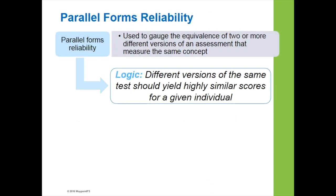The third type of reliability is called parallel forms. Here we're trying to gauge the equivalence or similarity of two or more different versions of the same assessment that measure the same concept — the same assessment, just having different versions. The key logic is that different versions of the same test should yield highly similar scores for a given individual.